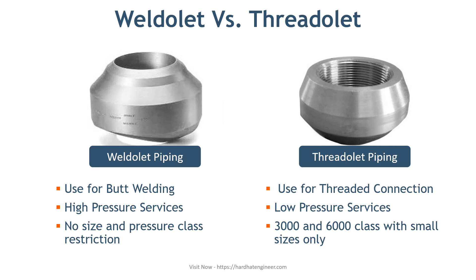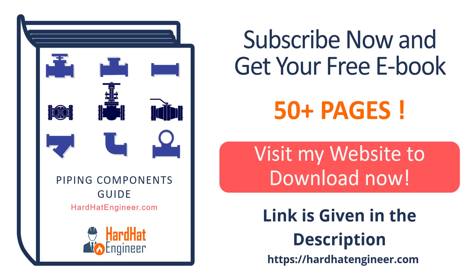The third difference is available sizes. Weldolet can be manufactured in any size to suit the requirement. Threadolets are mostly available in 3000 and 6000 pressure classes with limited sizes, as their uses are limited to small tappings.